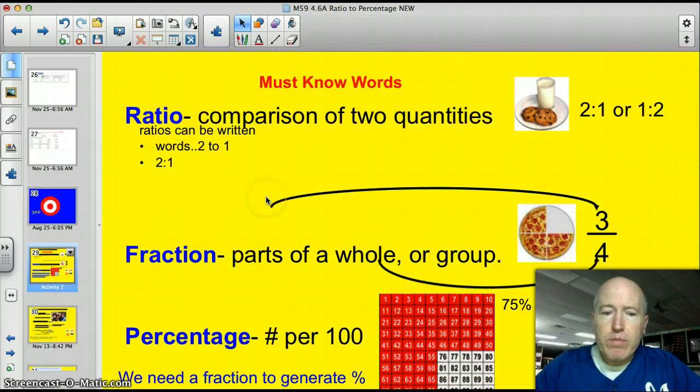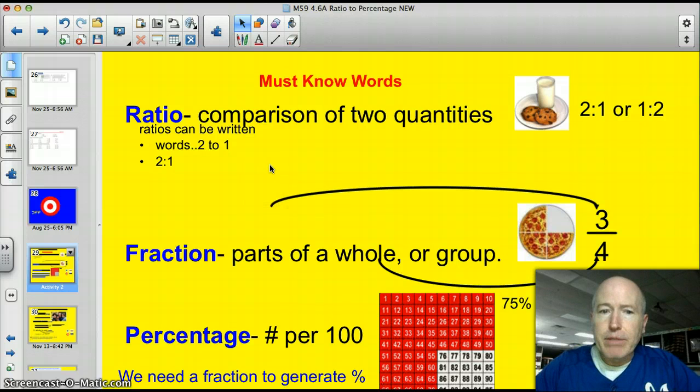Let's jump right into some must-know words, three of them you have to understand completely. Ratio. A ratio is a comparison of two quantities, and when you think ratio I want you to think about this picture here, two cookies to a glass of milk, it's the perfect ratio. That would be two cookies to one glass of milk, or one glass of milk to two cookies. You can reverse it as long as you specify how you're setting the ratio up, is it cookies to milk or milk to cookies. Ratios can be written as words like two to one, or just like I wrote here with a colon, two colon one.